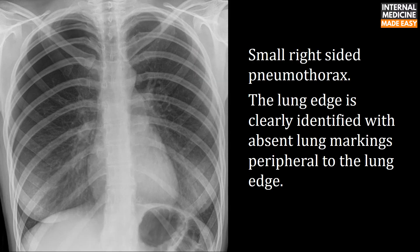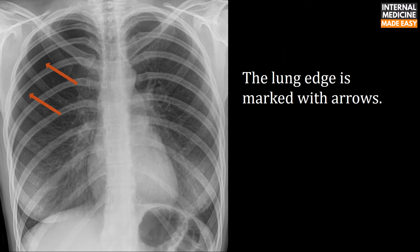This is a small right-sided pneumothorax. The lung edge is clearly identified with absent lung markings peripheral to the lung edge. The lung edge is marked with arrows.